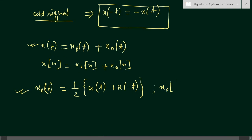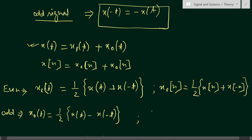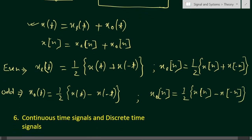For discrete time signals: x_e[n] equals half of [x[n] plus x[−n]]. For the odd part of a continuous time signal: x_o(t) equals half of [x(t) minus x(−t)]. Similarly for discrete time: x_o[n] equals half of [x[n] minus x[−n]]. These are the formulas for finding the even and odd parts of any signal.